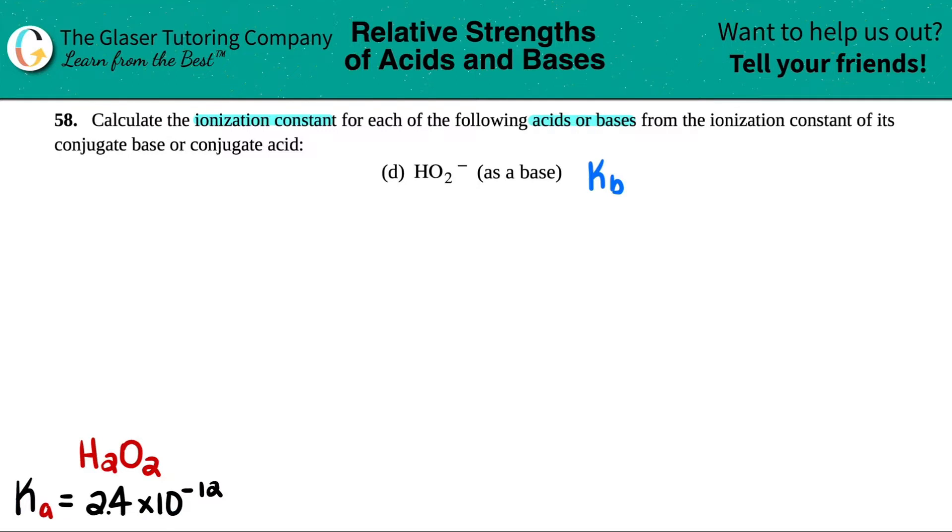So in essence, we want to take a Ka value for the acid and convert it into the Kb value for the base. What is the formula that I can convert a Ka to a Kb? Well, it's this formula right here. It's the Kw formula. Kw equals Ka times Kb.